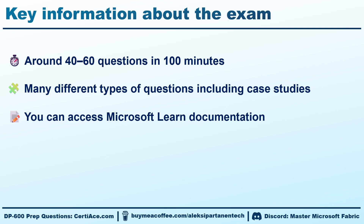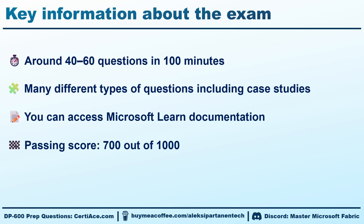Actually, in my DP700 series, I have a video about using the Learn documentation efficiently and other helpful tips and strategies for taking the exam. And finally, you need to have a score of 700 out of 1000 in order to pass the exam. Keep in mind that 700 is not exactly the same as 70%, since some questions are worth more points than others. But still, you don't need to get a nearly perfect score in order to pass. Aim to get around 80% of the questions correct, and you should be able to pass the exam.